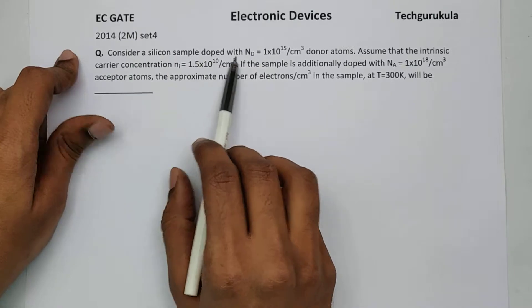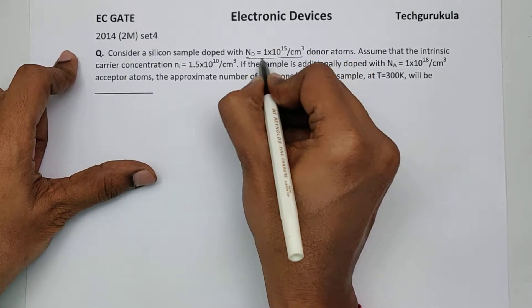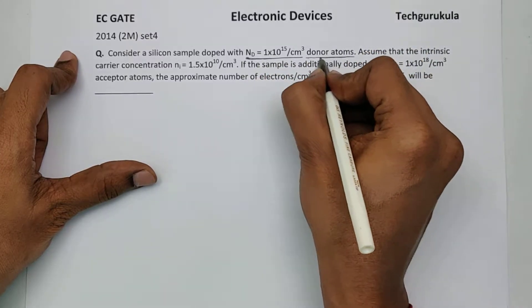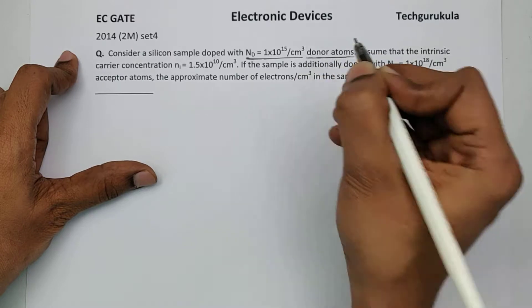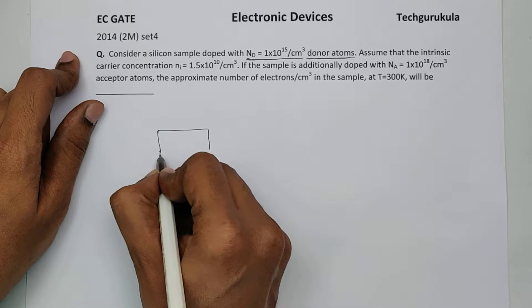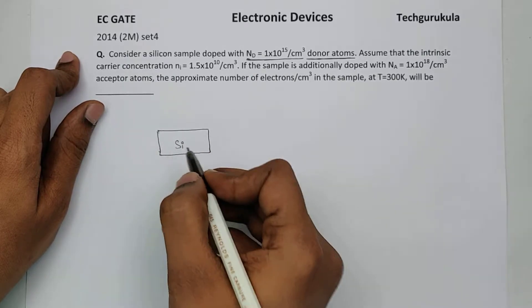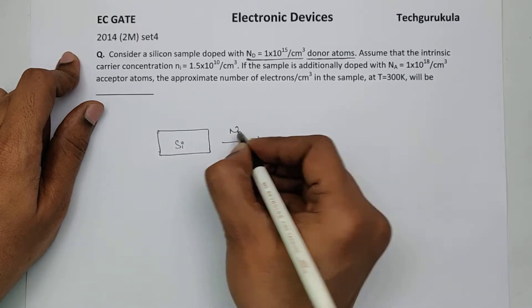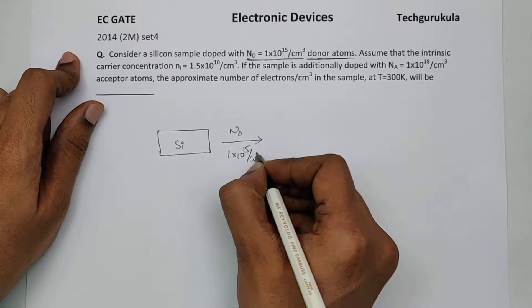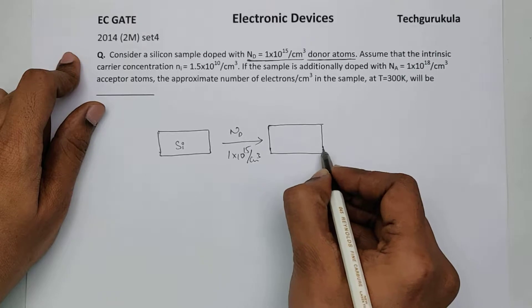Consider a silicon sample doped with Nd equals 1 times 10 power 15 per centimeter cube donor atoms. As Nd is mentioned, it is donor. So a silicon sample which is intrinsic or pure silicon is doped with Nd of 1 times 10 power 15 per centimeter cube, so it will become n-type semiconductor or n-type silicon now.